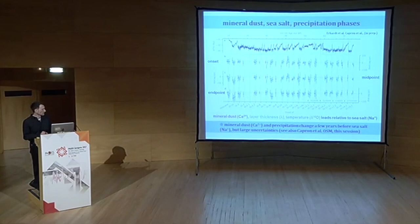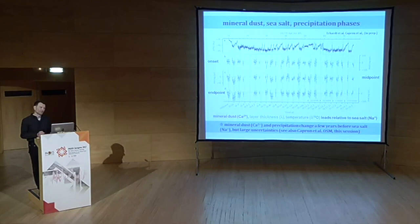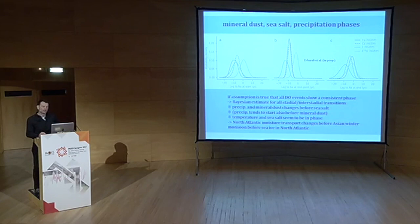Following a question from Ray about using the joint information from all Dansgaard-Oeschger events: the answer is yes and no. Yes, if we assume all events do the same thing, we can stack them together. If they are dependent on the glacial climate state, this might give false implications. But since statistically they are all earlier and within their uncertainties the same, I apply the Bayesian approach to get a joint probability function of the phasing of these aerosols relative to each other.